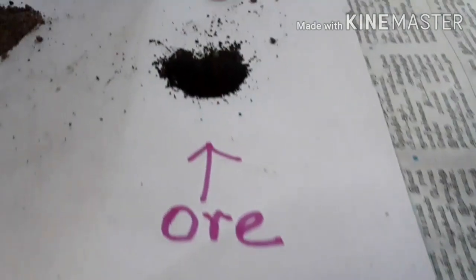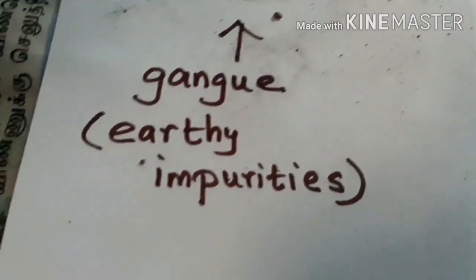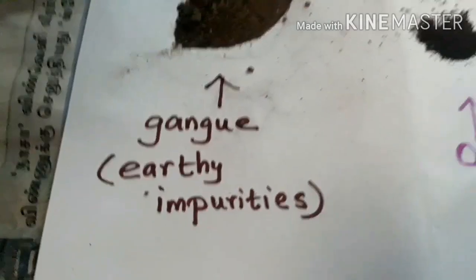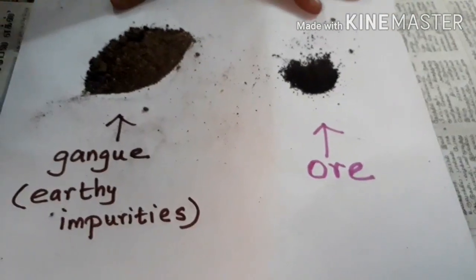Now, I think you may understand the concentration of ore. What is concentration of ore? We are separating the impurities from the ore particle — that is called concentration of ore.